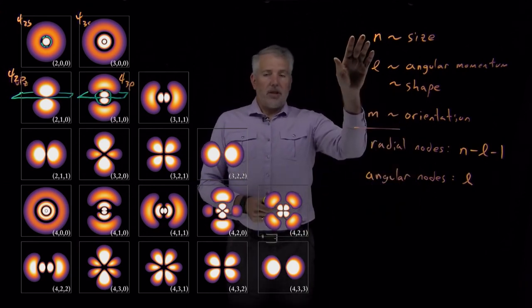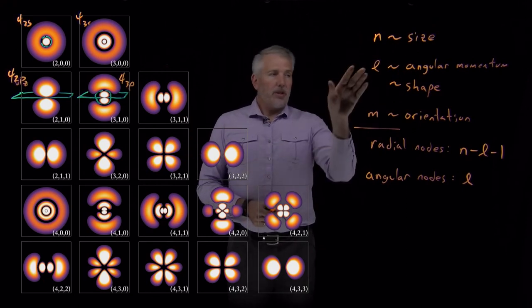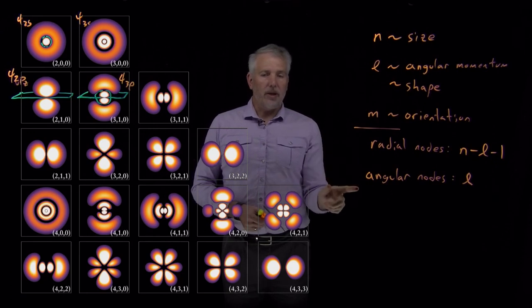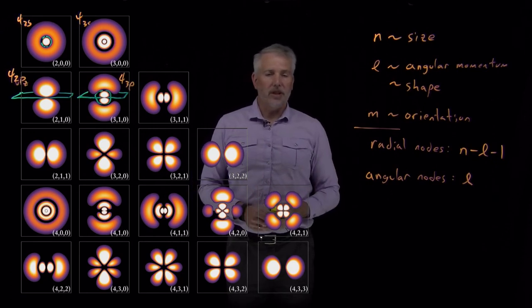So that tells us the general shape of the orbitals determined by l, their size, and their orientation. And we can know how many angular and radial nodes to divide those wave functions into if we also know the values of n and of l.